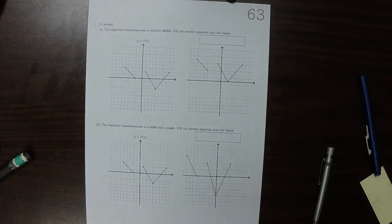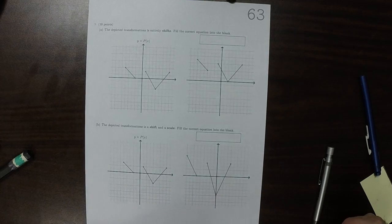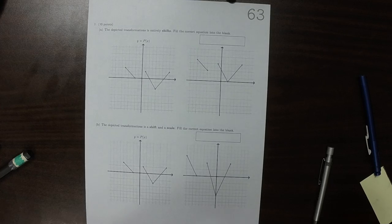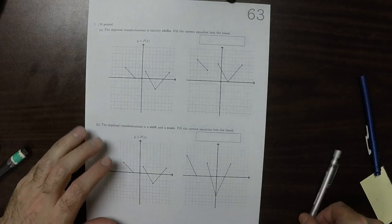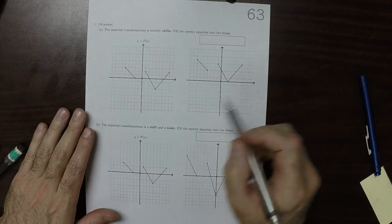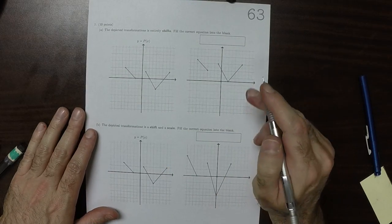This is the solution to written homework 63. The depicted transformation is entirely shifts. So let's label corresponding points.